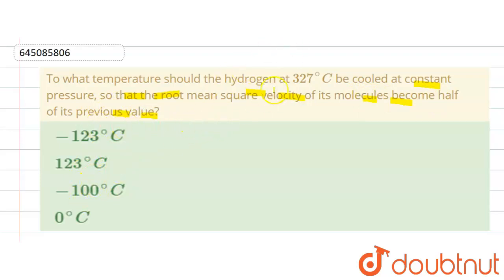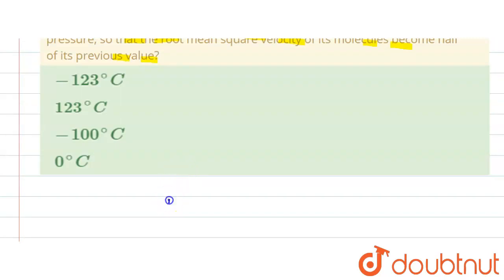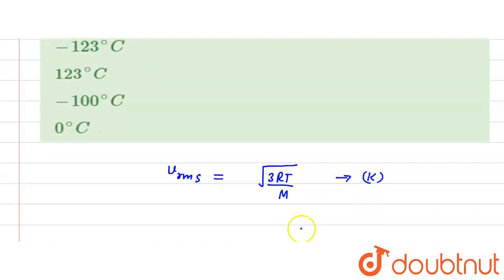The root mean square value - so we know that the root mean square velocity, that means V_rms, is equal to square root of 3RT upon M, and temperature in that case is Kelvin.